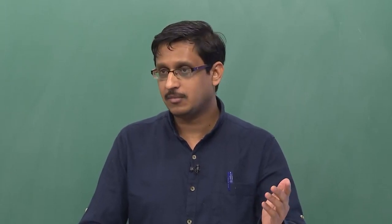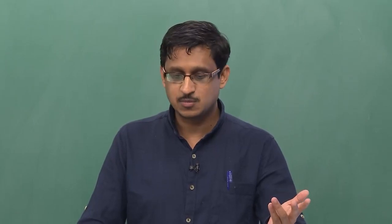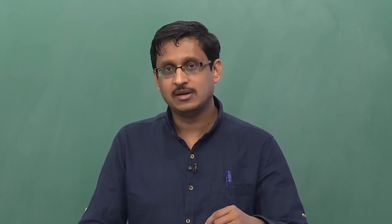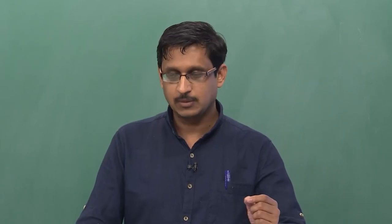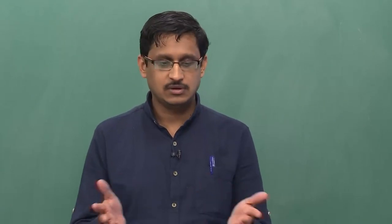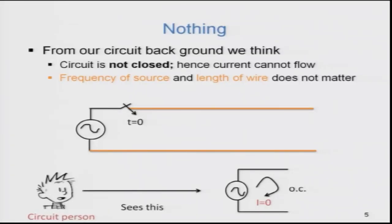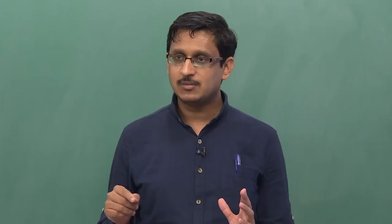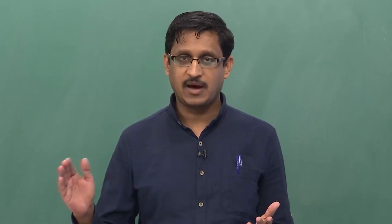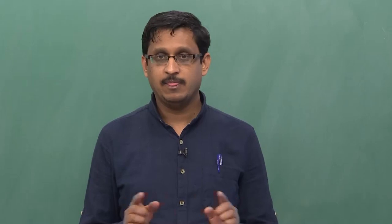Some might argue the problem statement is incomplete unless you specify the wire length and shape. Others might argue that if you replace the battery with a sinusoidal source, the outcome depends on the source frequency. A circuits person would see a battery connected to wires terminated with an open circuit — current is zero, and the circuit is not closed, so current cannot flow regardless of frequency, wire length, or wire shape.